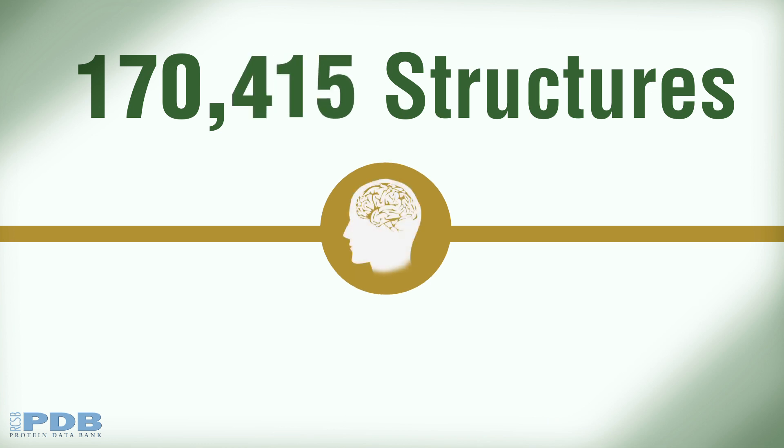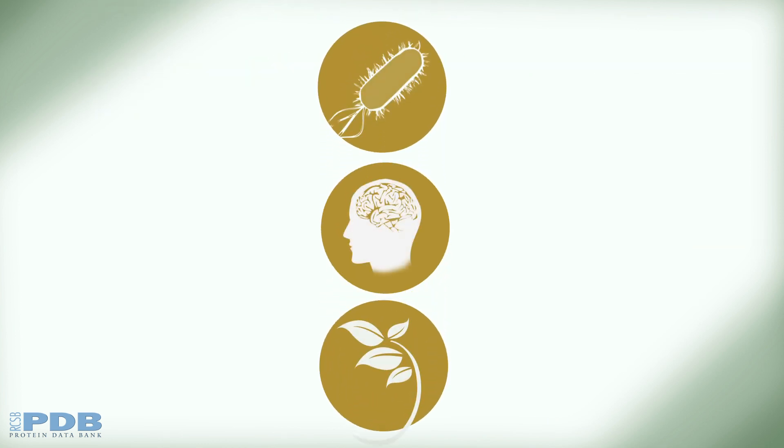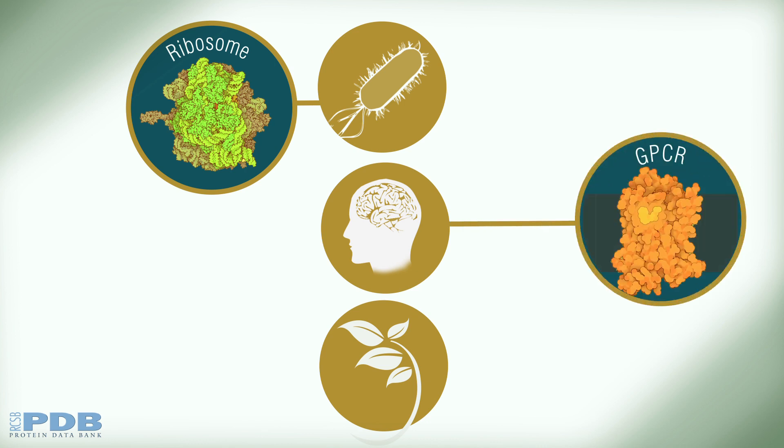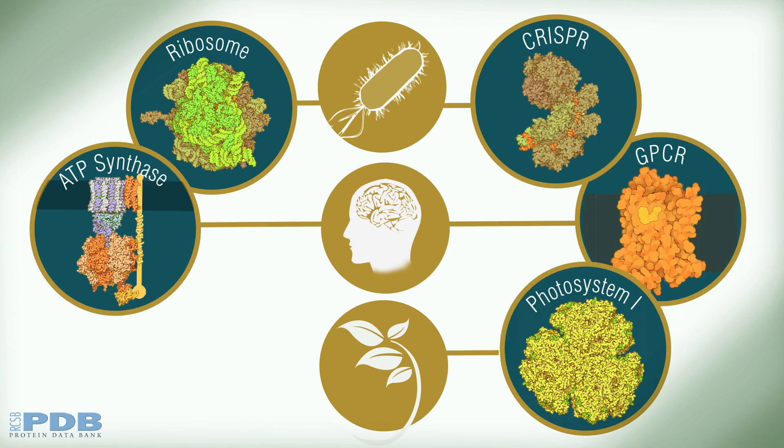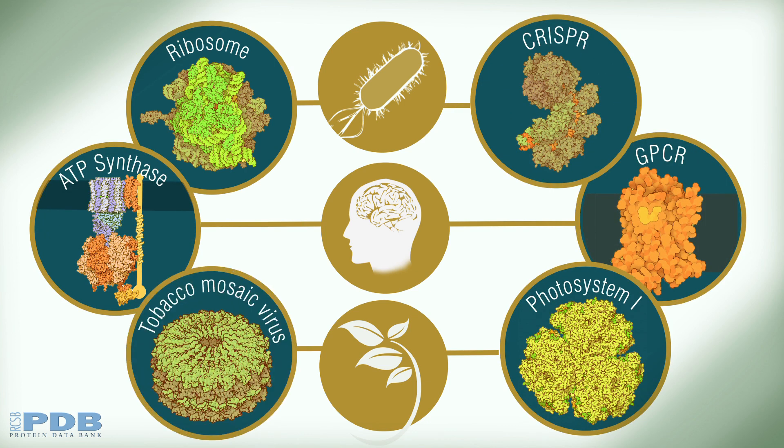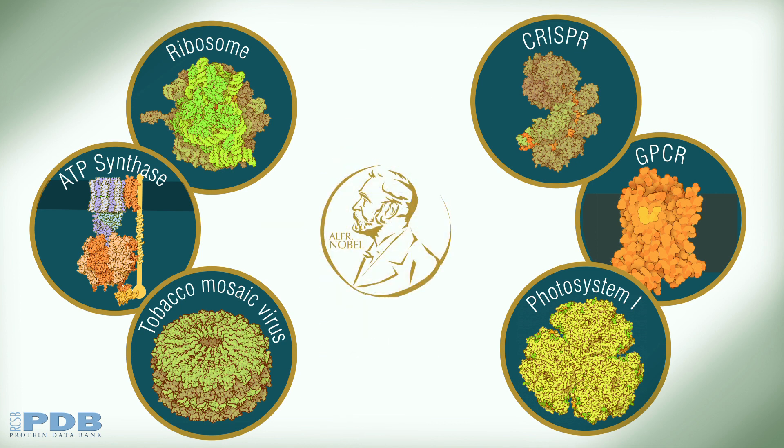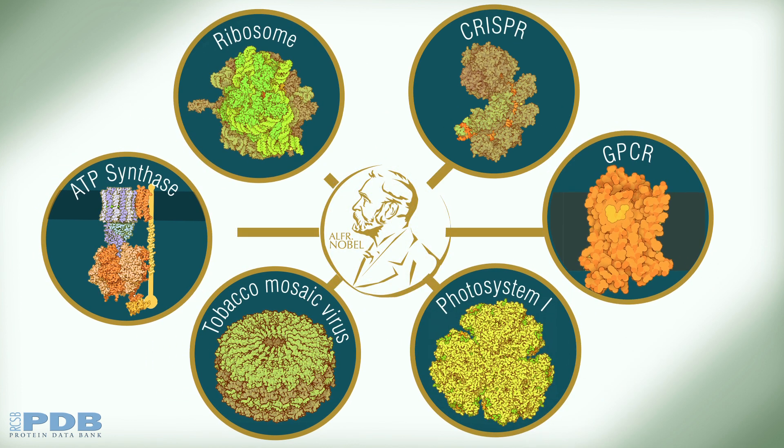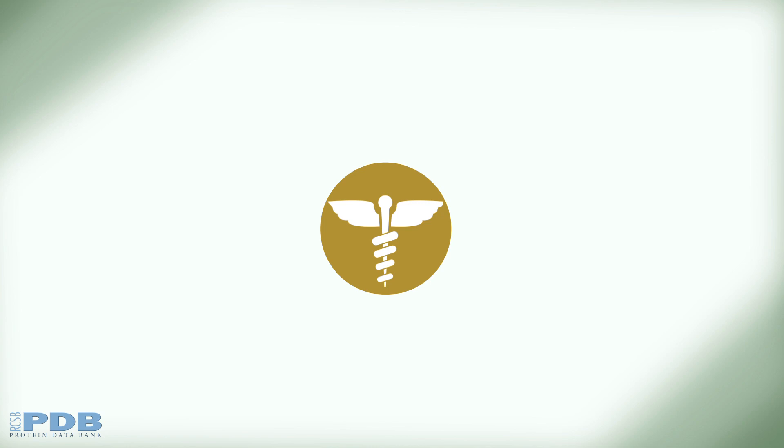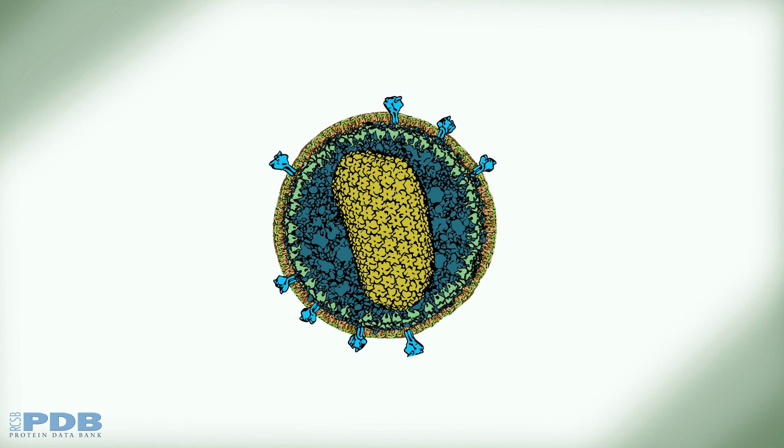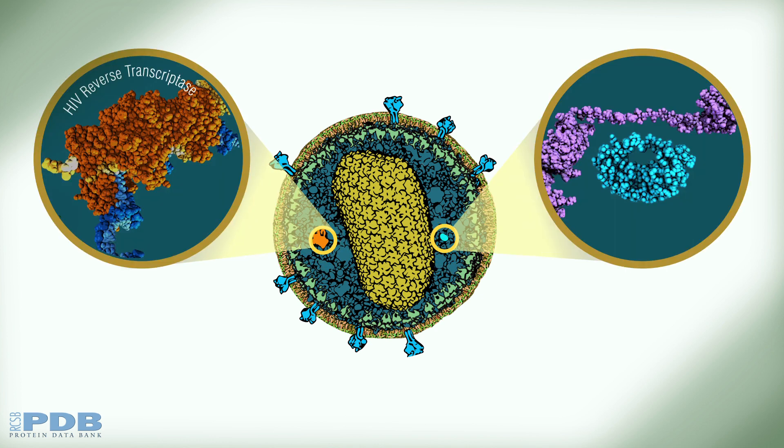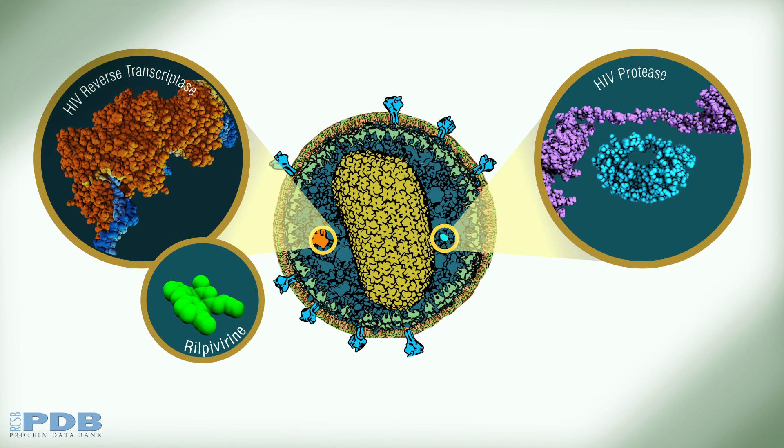The growing numbers of 3D structures of proteins and nucleic acids further our understanding of biology and help us explore how life works at the atomic level. Many Nobel Prizes have been awarded for projects involving molecular structures. Structural biology research is essential in addressing major public health emergencies. For example, scientists have used the structures of HIV proteins to design drugs that stop the virus from multiplying.